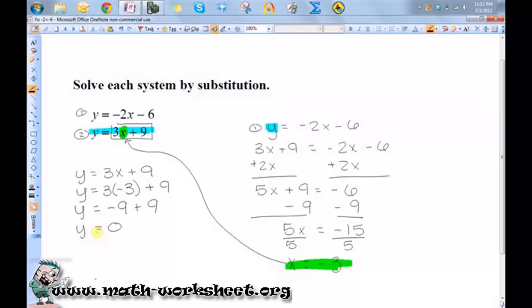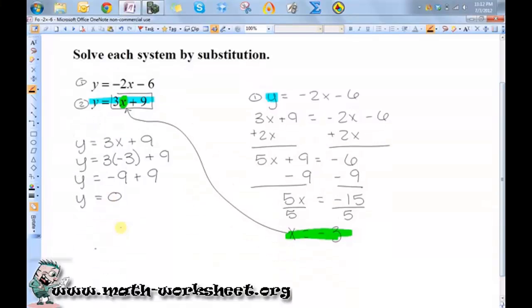Now a lot of students will stop here and they'll leave their answer like this, but all answers should be written in ordered pair form, where x is the first value and y is the second, so it should be negative 3, 0.